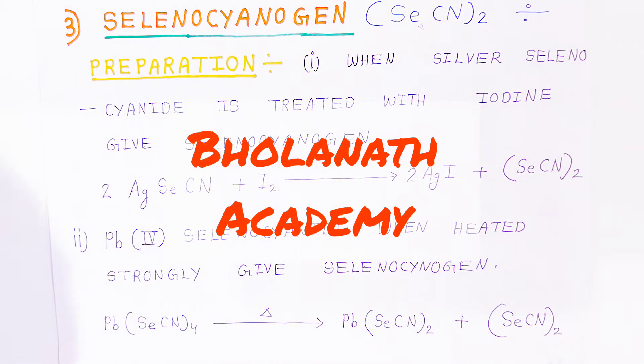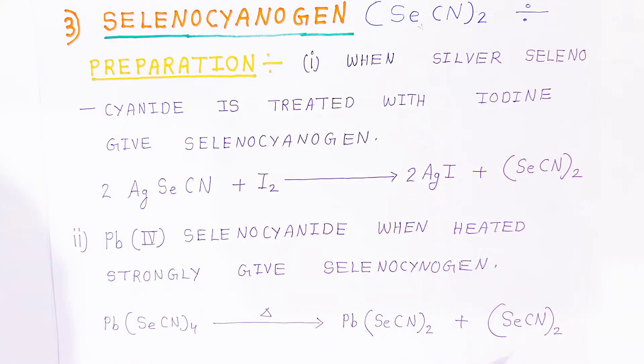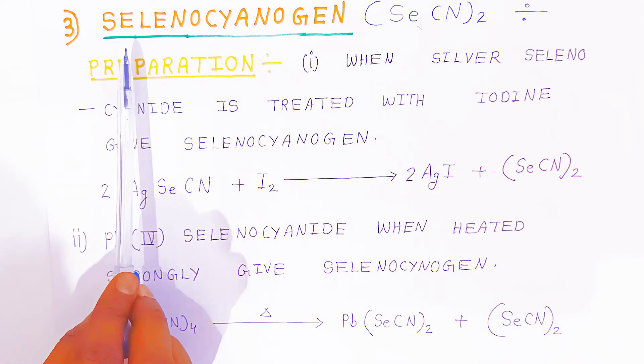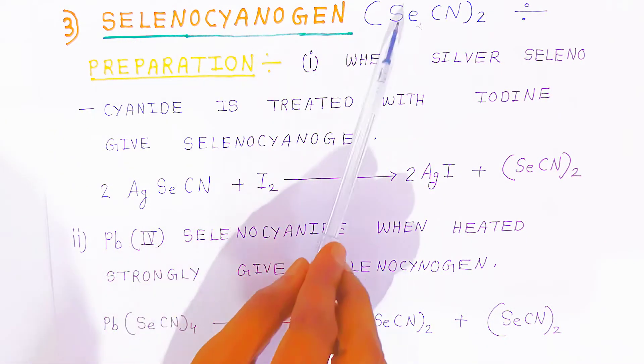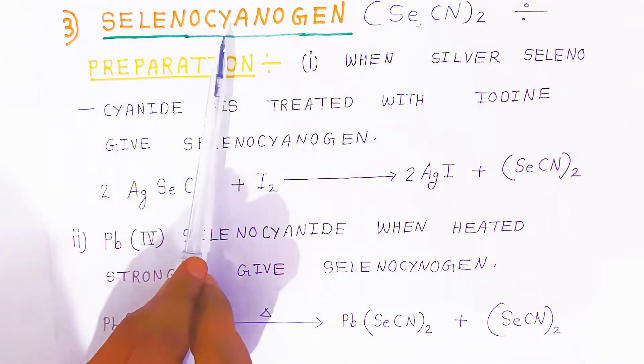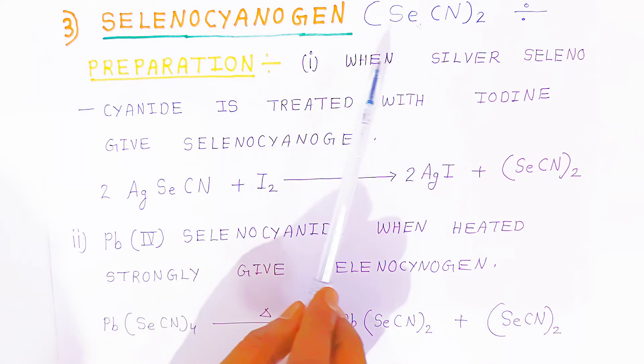Hello students, once again welcome to Bhonanath Academy. In this video, we are going to see the third example of pseudohalogen that is called selenocyanogen, Se(CN)₂. How are you going to prepare this compound?